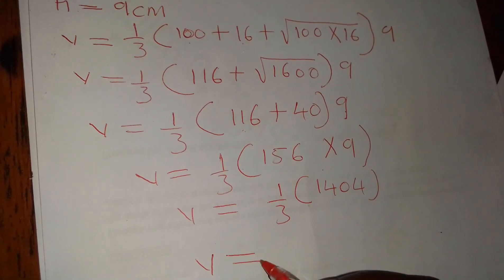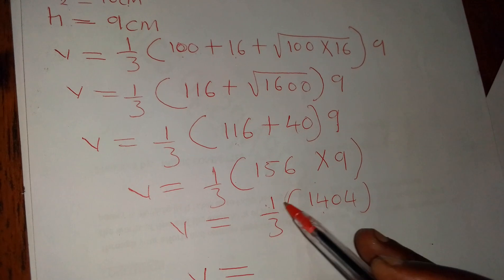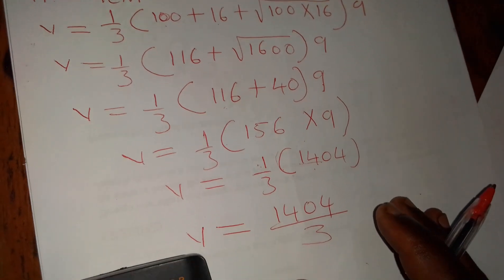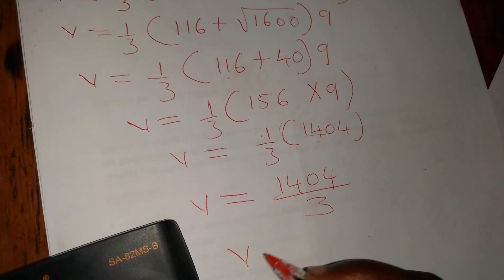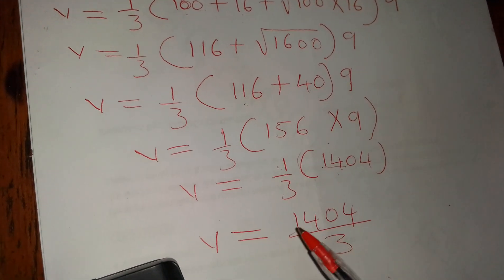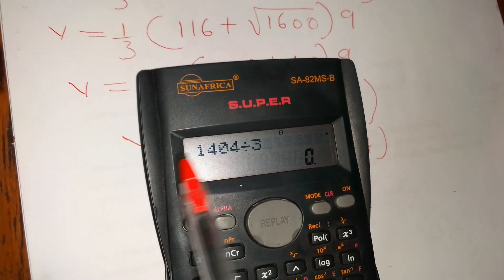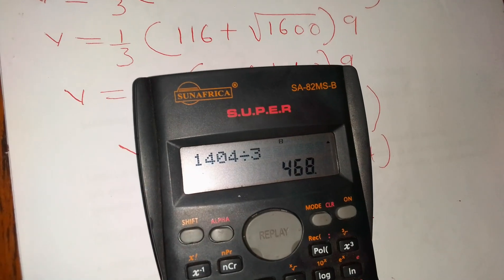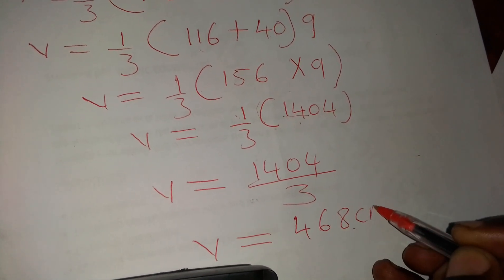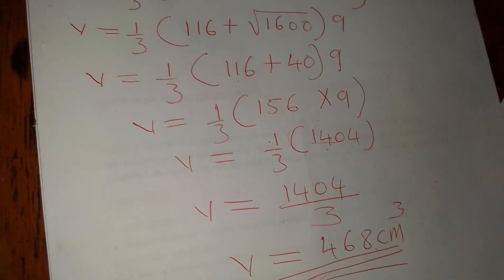The brackets mean multiplication. 1 multiplied by 1,404 gives 1,404 over 3. Division is the last part of the calculation. So 1,404 divided by 3, using a calculator, gives 468. That will be our volume: 468 cubic centimeters. Volume is measured in centimeters cubed. So this is our answer.